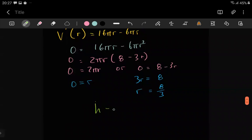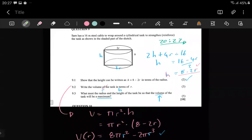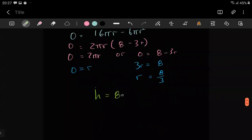That's the r. For h we know it is like 8 minus 2r, so it's like 8 here minus 2r. We just have to use our calculator, so it's like 8 minus 2 multiplied by 8 over 3. That's just giving us 8 over 3 as well.